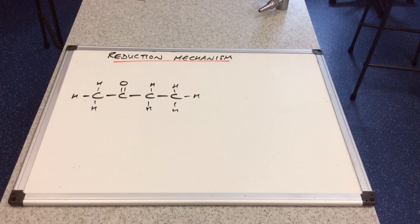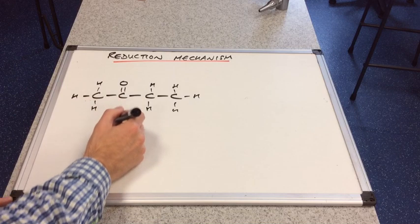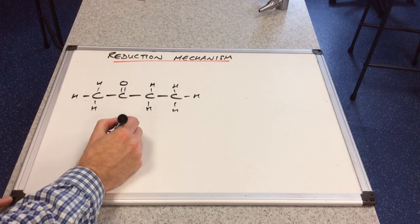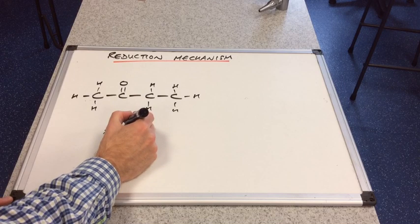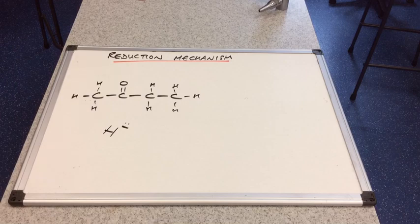So butanone, and we're going to reduce it with the NaBH4 in water. And so in the mechanism, we represent the reducing agent as the hydride ion that I mentioned at the start. So there's the lone pair, got the minus sign.